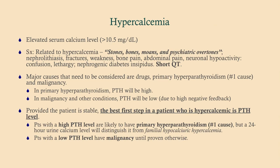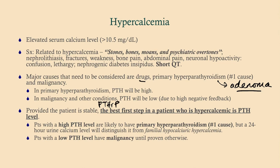Remember the symptoms: stones, bones, moans, and psychiatric overtones. The major things to consider are drugs, primary hyperparathyroidism — which is the number one cause, just think adenoma; 85% of causes are due to adenoma, though carcinoma and hyperplasia are possible. In malignancies, the PTH will be low because things like squamous cell lung cancer or breast cancer can secrete PTHrP, which acts just like PTH, but when you measure PTH it will be low because it's not PTH, it just resembles it. Look on a test question for a smoker or a woman who hasn't gotten her mammograms.